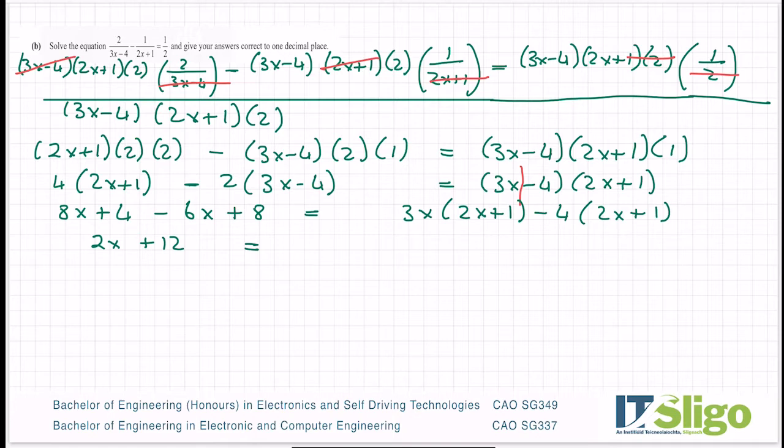Right, let's multiply this, the right-hand side in. 3x by 2x is 6x squared. 3x by 1 is 3x. Minus 4 by 2x is minus 8x. Minus 4 by 1 is minus 4.